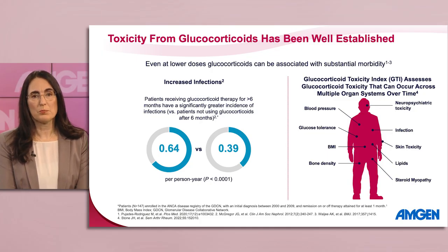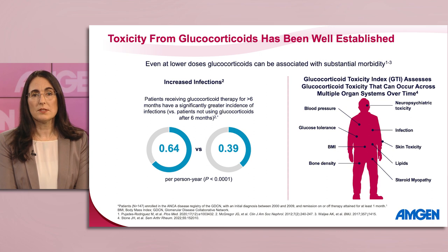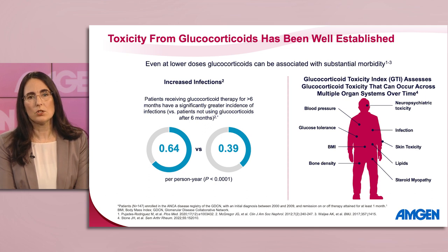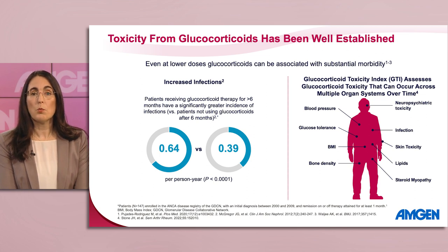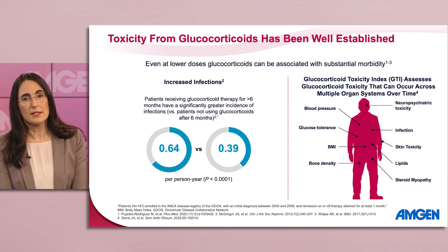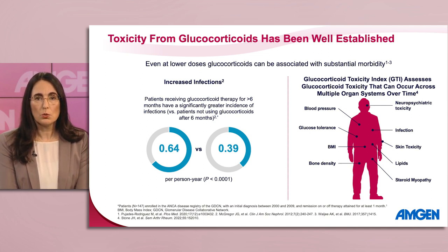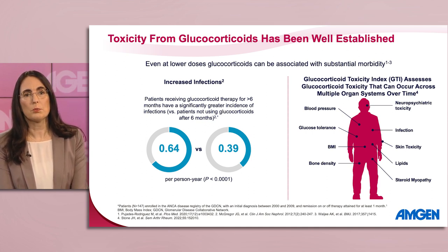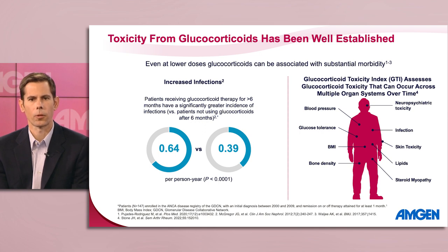A common issue includes increased risk of infection. Among patients in the ANCA disease registry of the glomerular disease collaborative network, or GDCN, patients receiving glucocorticoid therapy for more than six months had significantly greater incidence of infections versus those not using glucocorticoids after six months, with a difference of 0.64 versus 0.39 infections per person per year. Beyond infection, glucocorticoids are also associated with a wide variety of adverse events that can be measured by validated tools such as the glucocorticoid toxicity index, or GTI.